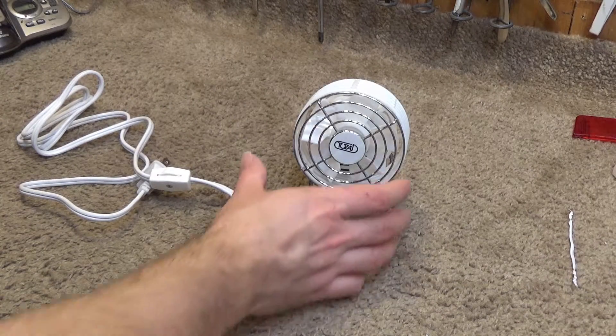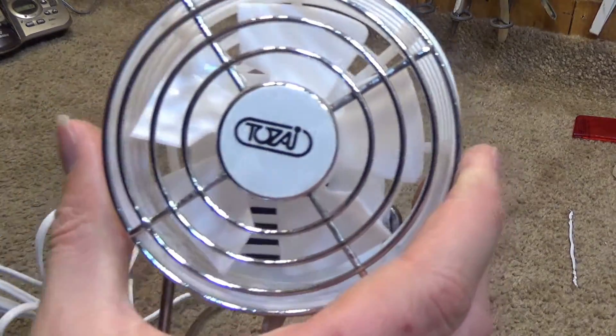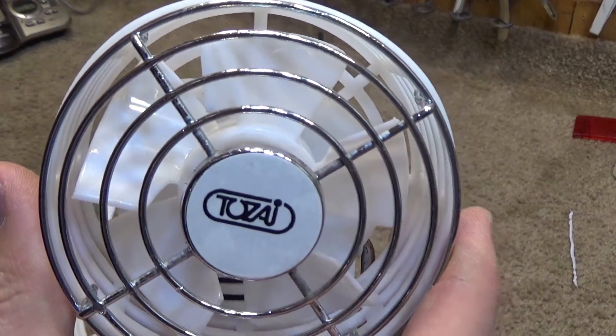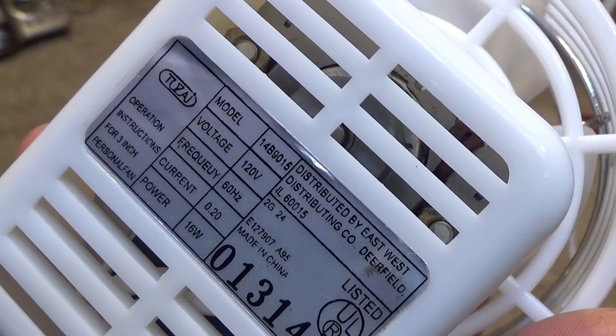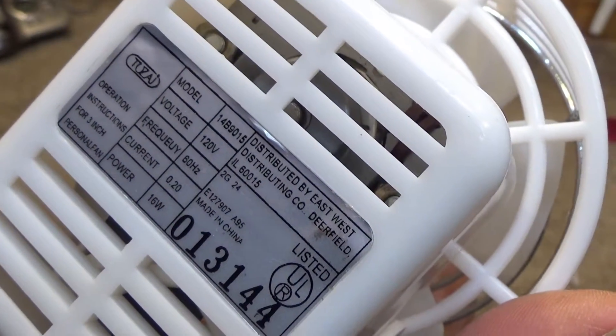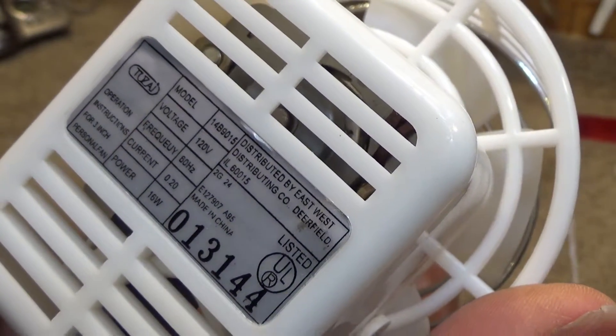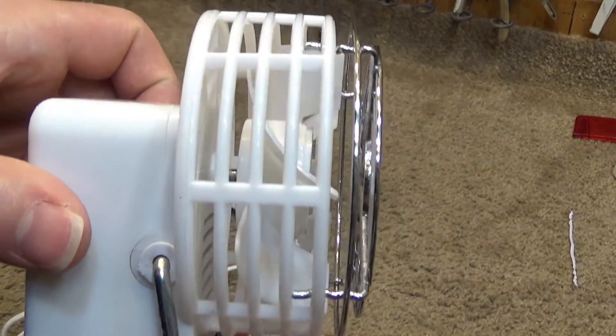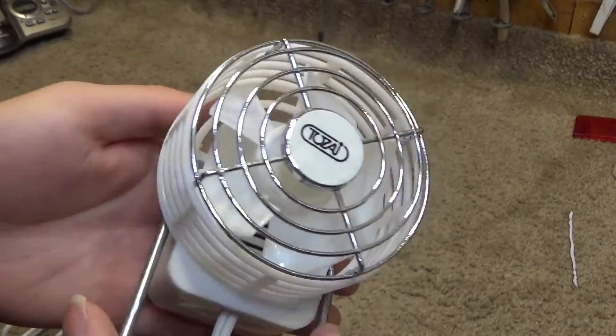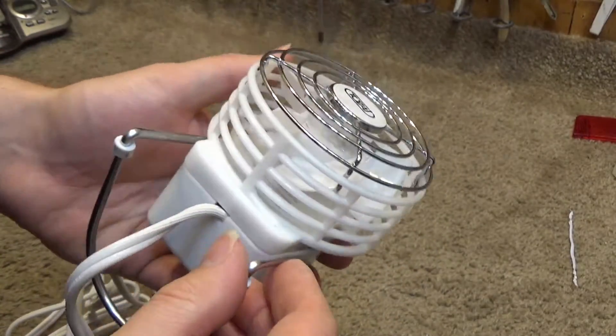Hello viewers, we're back once again with the Toze 3 inch personal fan model 14B9015. I'm kind of intrigued by this thing. The blade pitch is very deep, so I could see this moving a decent amount of air.